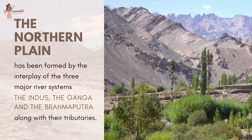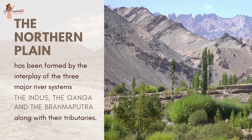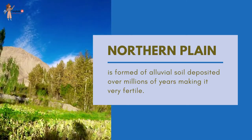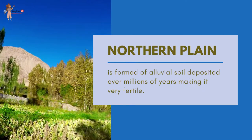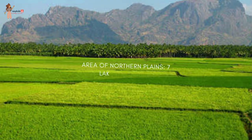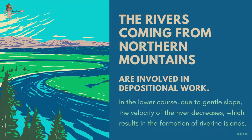The northern plain has been formed by the interplay of three major river systems — the Indus, the Ganga and the Brahmaputra — along with their tributaries. This plain is formed of alluvial soil. The deposition of alluvium over millions of years in a vast basin at the foothills of the Himalayas formed this fertile plain. With a rich soil cover, adequate water supply and favorable climate, it is agriculturally a productive part of India. It spreads over an area of seven lakh square kilometers, is about 2,400 kilometers long and 240 to 320 kilometers broad, making it a densely populated physiographic division.